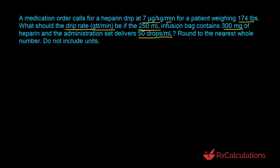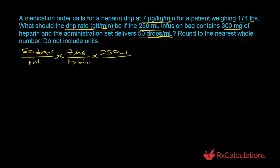Since the goal is to determine the drip rate in drops per minute, we start with the calibration factor: 50 drops per milliliter. We multiply by the normalized mass rate of 7 micrograms per kilogram per minute, then multiply by the volume of the infusion bag — 250 milliliters containing 300 milligrams of Heparin. The milliliters cancel out. We then convert milligrams to micrograms using 1 milligram equals 1,000 micrograms, so milligrams and micrograms cancel out.